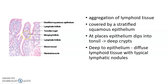Deep to the epithelium there will be diffuse lymphoid tissue with typical lymphatic nodules. This is a lymphatic nodule or lymphatic follicle. It has a germinal center surrounded by lymphocytes.